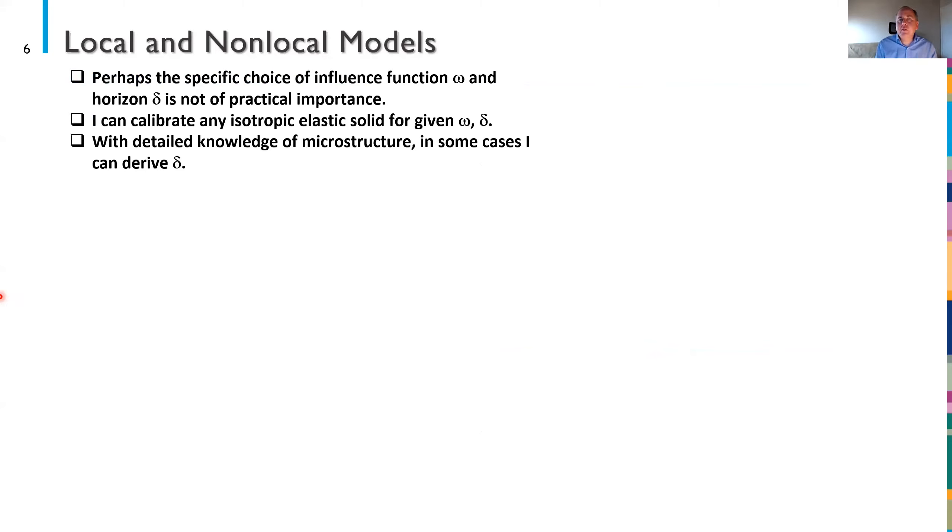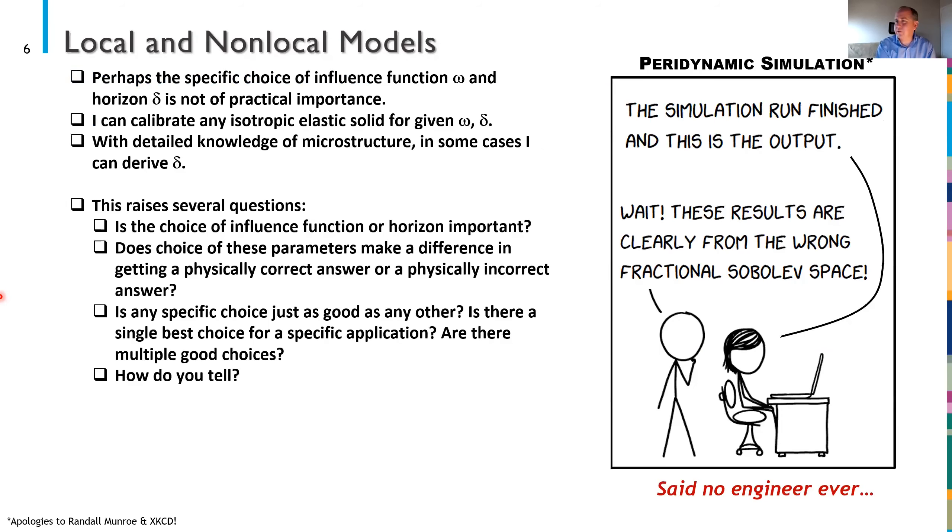And so this does beg a few questions. Maybe the specific choice of the influence function or the horizon δ is just not of practical importance. For a linear elastic material for some ω and some δ I can calibrate that material to produce the correct linear deformation for some choice of δ. And so maybe it doesn't matter if I can get the right linear response for any δ. If I have detailed knowledge of the microstructure in some cases I can derive δ but in general I don't have detailed knowledge of the microstructure. So this begs a few questions and these are at least some of those questions.